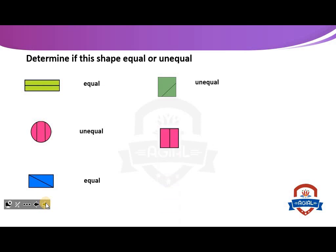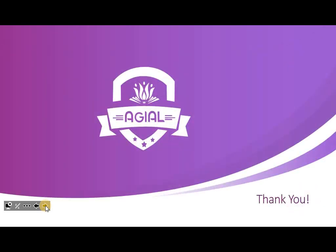This square is divided into two equal parts, so these two parts are equal. The last one: this circle is divided into two parts, but these parts are unequal. Do you understand? Equal or unequal shapes. Thanks for listening and have a nice day.